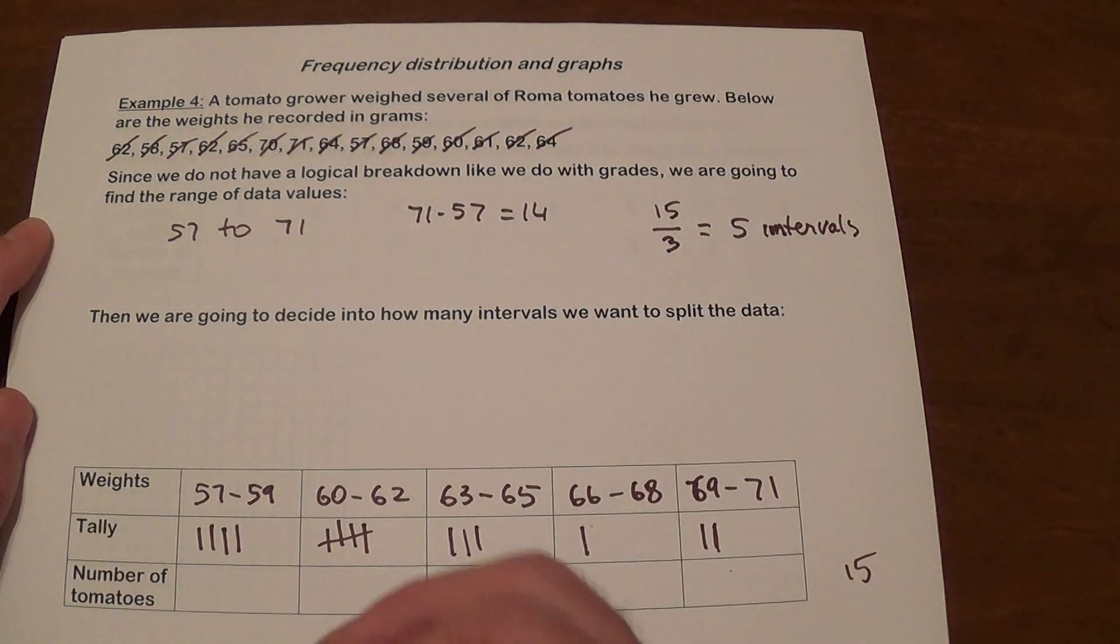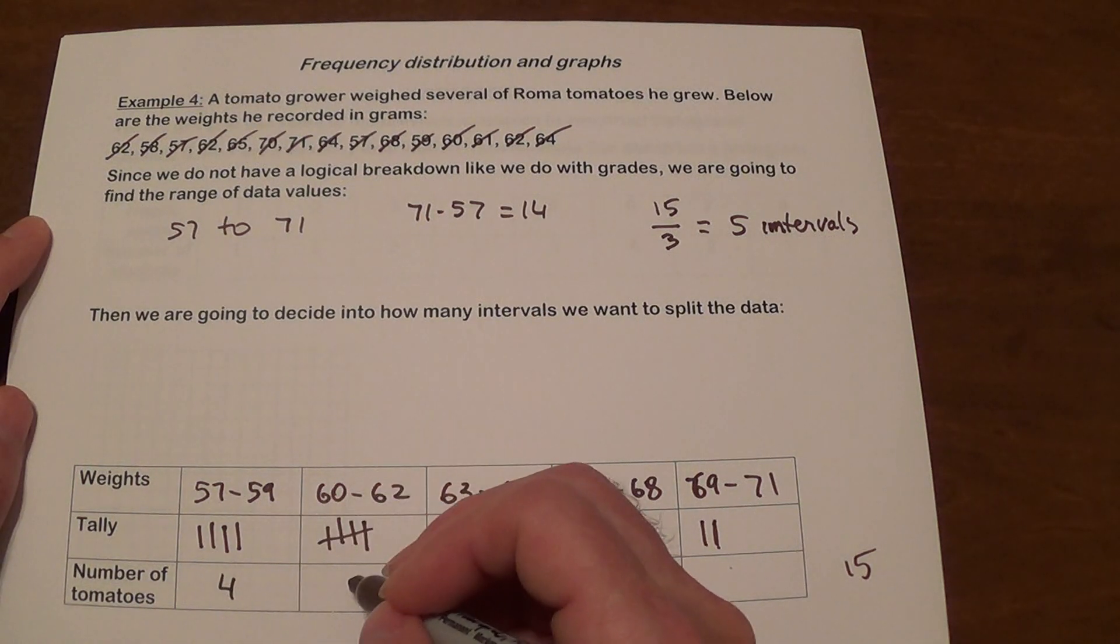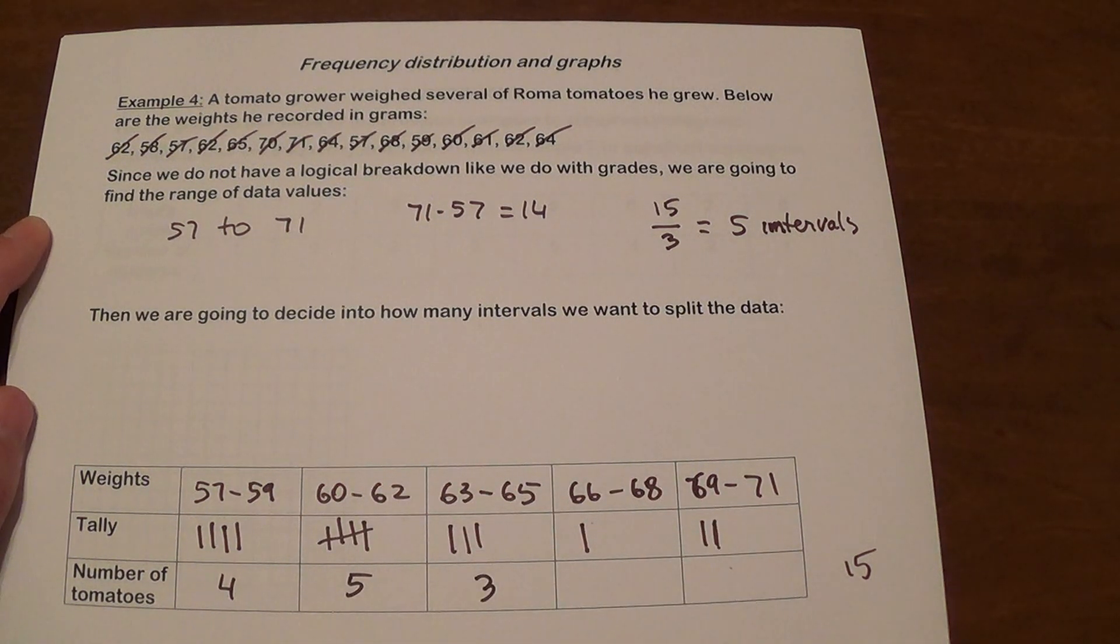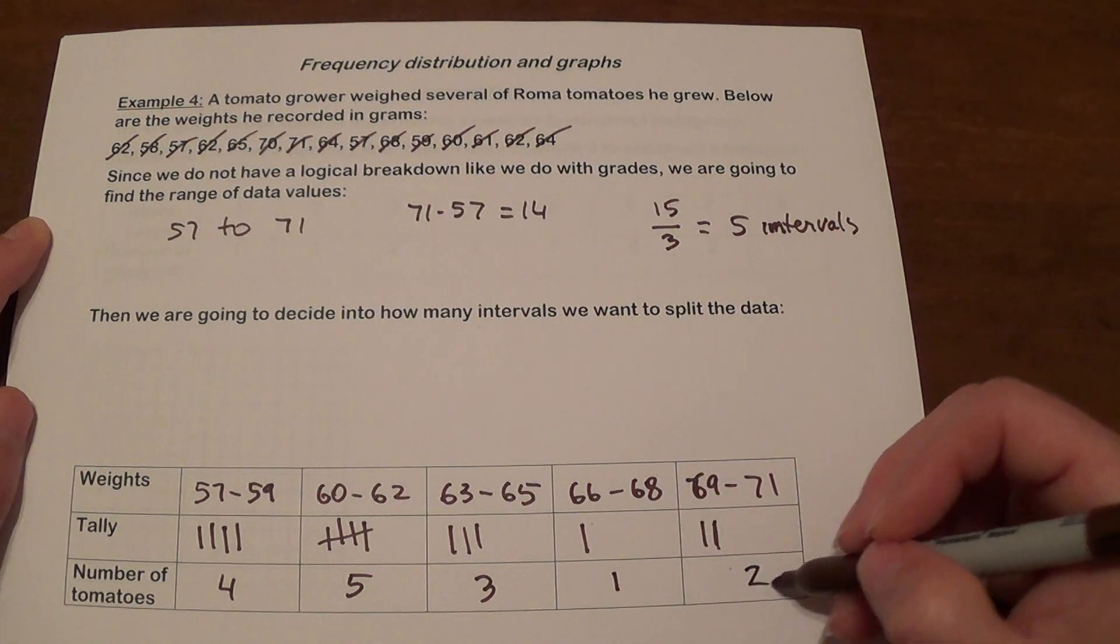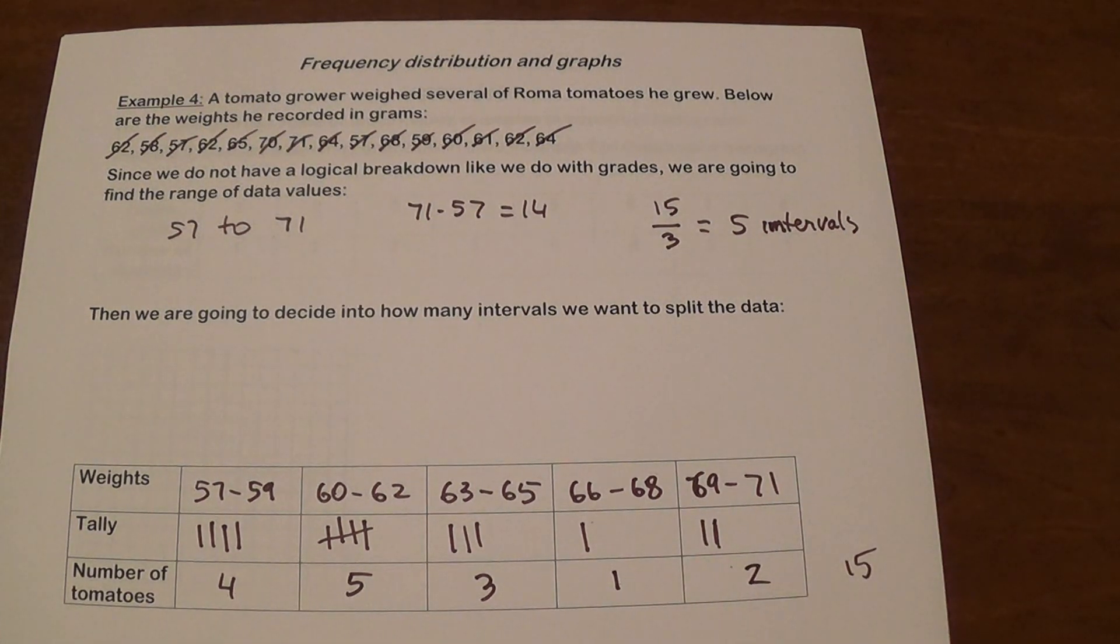Okay. And now we have our totals, which is 4, 5, 3, and then 1, and 2. And there's our frequency distribution.